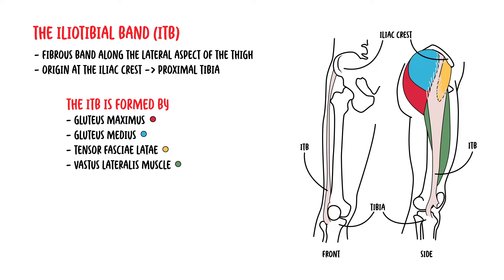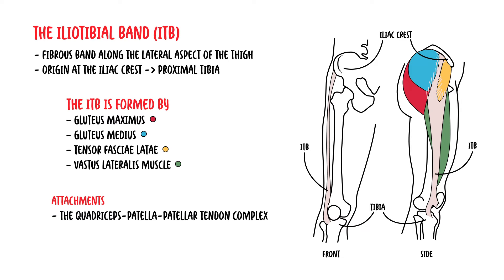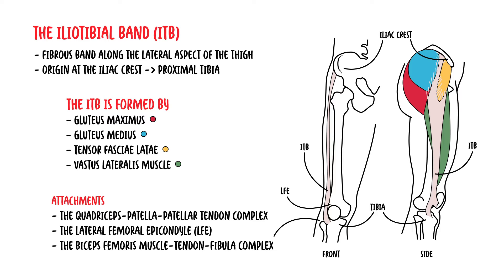The ITB has many attachments distally, and these include the quadriceps patella-patella tendon complex, the lateral femoral epicondyle (LFE), and the biceps femoris muscle-tendon-fibular complex. Distally, the ITB courses over the lateral femoral epicondyle before inserting at Gerdy's tubercle at the anterolateral tibia, just below the knee joint line.